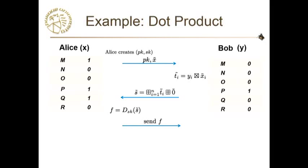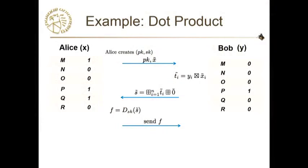Let's consider dot product. Alice has a vector, Bob has a vector, and Bob wants to probe whether a particular word is present in Alice's document. He sets 1 to the corresponding element P and initializes everything else to 0. After the protocol, both can find out the dot product, but since Bob is malicious, he can probe individual elements and find out if the word is present in Alice's document — without any background information. The whole idea is to combine differential privacy and SMC now.